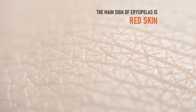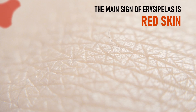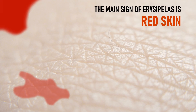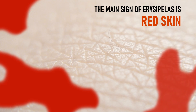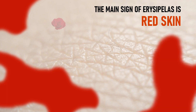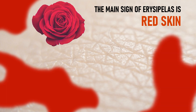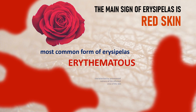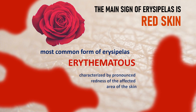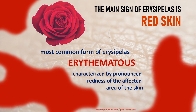Local symptoms of erysipelas. After that, within 1–2 days, local symptoms appear which gave the name to the disease. Erysipelas is Greek for 'red skin.' Indeed, the most common form is characterized by pronounced redness of the affected area of the skin.